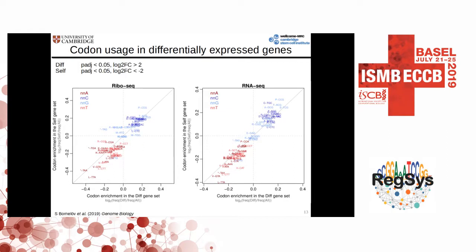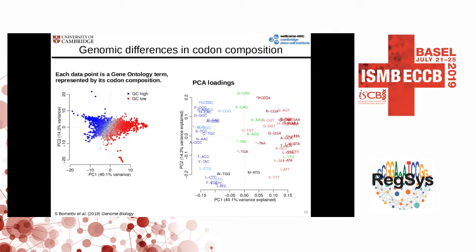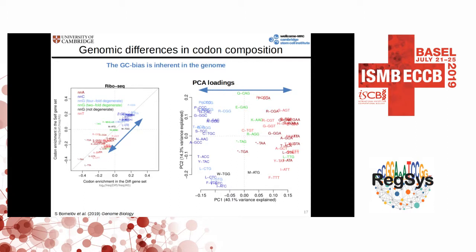The codons with a G at the third position are a little bit more complicated — some of them are enriched, but some of them are close to the middle. This can actually be explained by the degeneracy of the codon. Codon degeneracy is when you can change the third base and still encode for the same amino acid. The four fourfold degenerate ones are enriched, but the other ones are in the middle. So the third nucleotide is correlated with expression changes following differentiation. To answer whether this is a genomic feature, we did a PCA visualizing each gene ontology term by its codon composition. This separates the GO terms by GC content, and the separation on the first principal component is very similar to our diagonal. We believe this is encoded in the genome and may be relevant for differentiation.